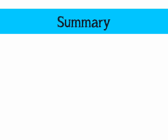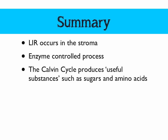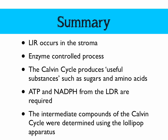In summary: the light-independent reaction occurs in the stroma, it's an enzyme-controlled process, and it produces useful substances like sugars and amino acids. ATP and NADPH from the light-dependent reaction are required, and the intermediate compounds of the Calvin cycle were determined by Melvin Calvin using the lollipop apparatus. Thanks very much — like, comment, and subscribe.